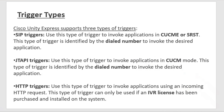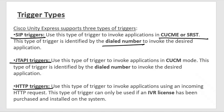To send certain information between users, Unity Express, and the call manager, triggers are used. Three types of triggers exist: SIT trigger, JTAPI trigger, and HTTP trigger. The SIT trigger is used to invoke applications in CUCM Express or SRST, and is identified by a dialed number to invoke the desired application.